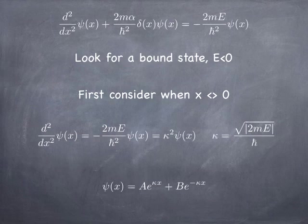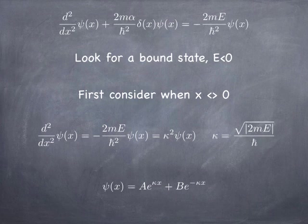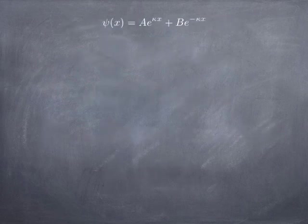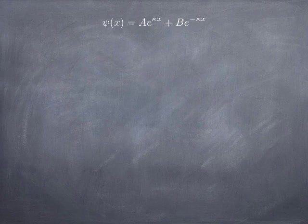And psi has to therefore be a superposition of two types of solutions, an e to the plus kappa x and an e to the minus kappa x. Now, the thing is, if you're left of the origin, then the term e to the minus kappa x is going to lead to trouble, because it'll blow up as x goes to minus infinity. If you're to the right of the origin, e to the plus kappa x is going to blow up.